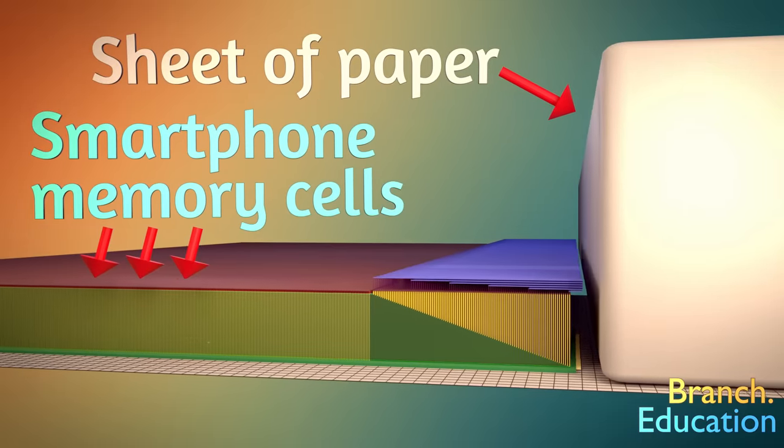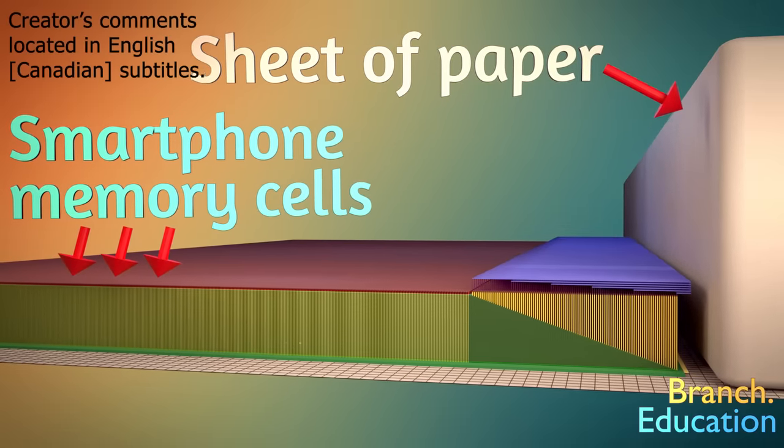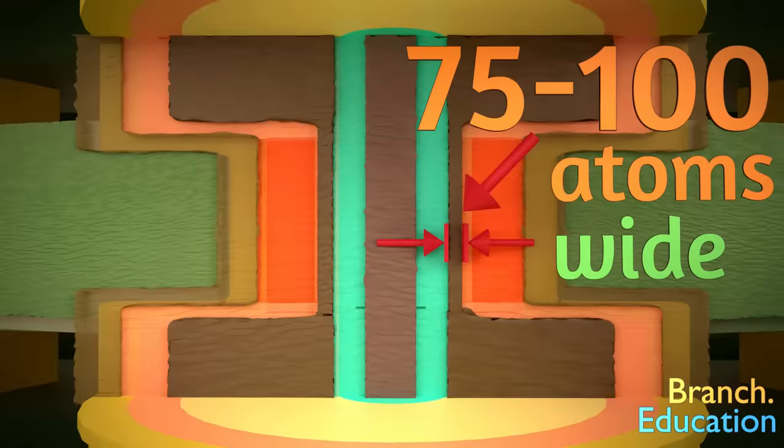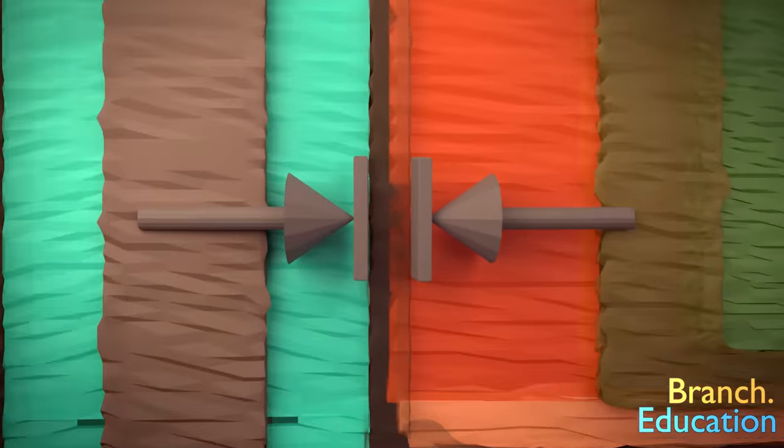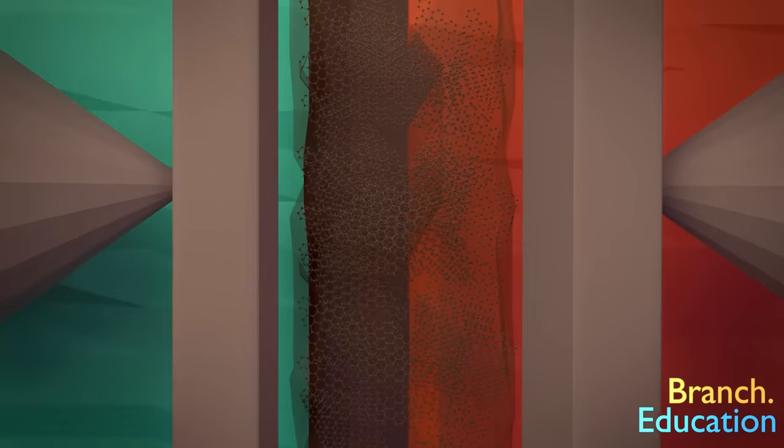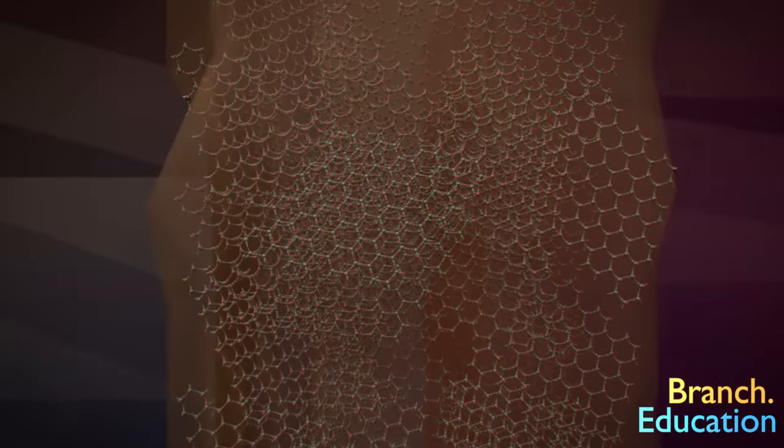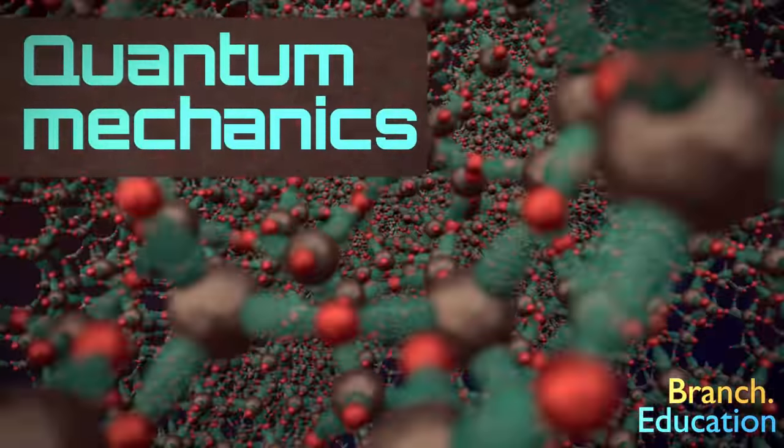In your smartphone, there are millions of memory cells that store all your phone's data. And in each memory cell, there's a structure whose dimensions are only around 75 to 100 atoms wide. If this structure were thicker or thinner, the memory cells wouldn't work. And in this episode, we'll explore why it's only around 75 to 100 atoms thick, and how quantum mechanics is involved.